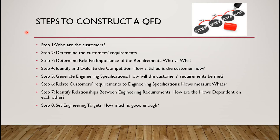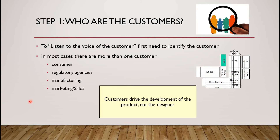I will be presenting the theory of each step to construct the QFD. In total, there are 8 steps. Firstly, before everything else, we need to know who the customers are. In most cases, there is more than one customer — consumers, regulatory agencies, manufacturing, and marketing. Customers should be put in the first place because they drive the improvements.